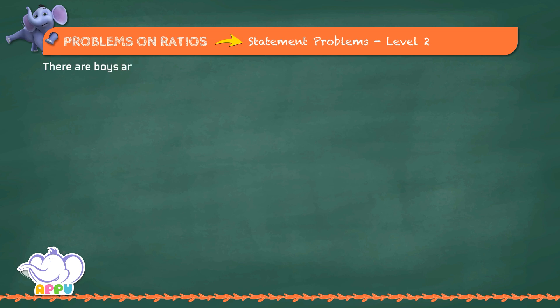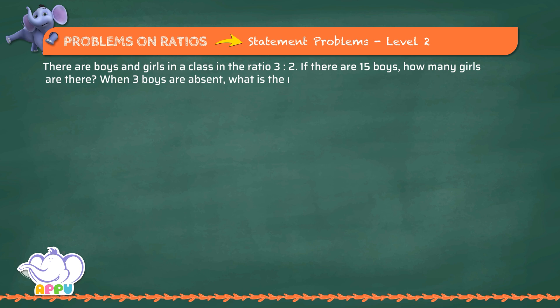There are boys and girls in a class in the ratio 3 is to 2. If there are 15 boys, how many girls are there? When 3 boys are absent, what is the new ratio of boys to girls?